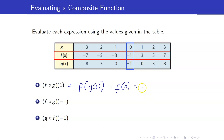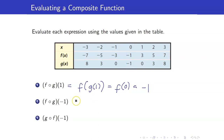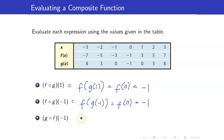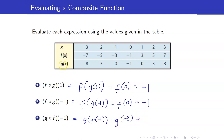g of negative 1 is 0, and we already knew earlier that f of 0 is negative 1. Next, g circle f of negative 1 is defined to be g of f of negative 1. f of negative 1 is equal to negative 3, and g of negative 3 is equal to 8.